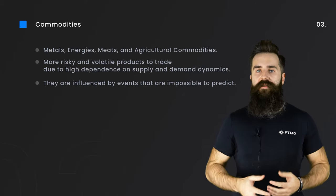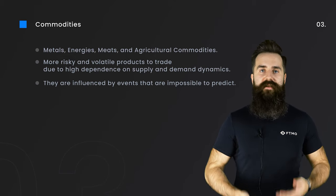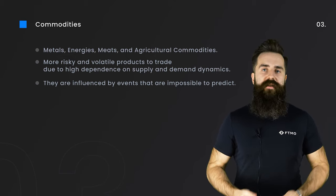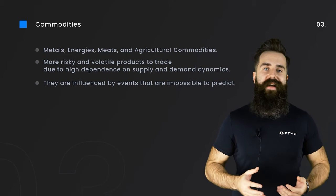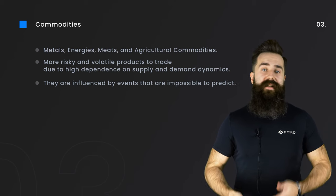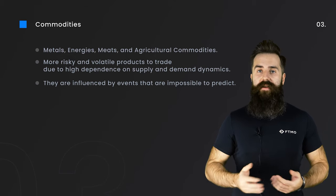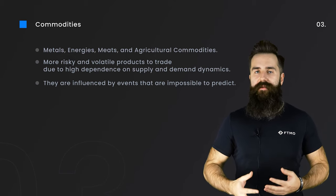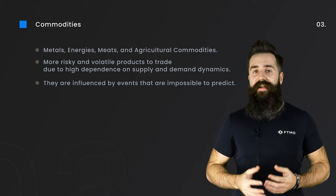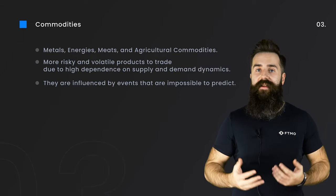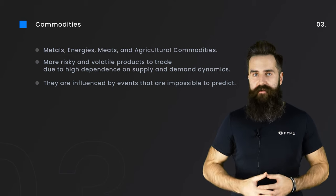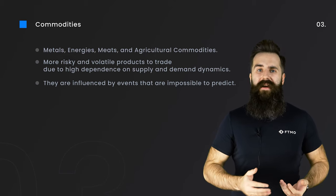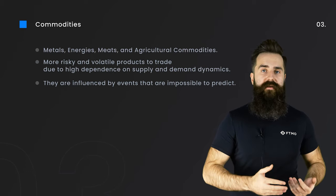Commodities are separated into four major categories: metals, energies, meats, and agricultural commodities. In metals we can find gold, silver, copper, or palladium. Energies are crude oil, Brent oil, or natural gas. These two categories are the most popular ones traders choose to trade, but we can find some traders that also specialize in meats such as live cattle or lean hogs, or agricultural commodities where we can find corn or wheat. Commodities in general tend to be more of a risky and volatile product to trade, thanks to high dependence on supply and demand dynamics. They are very often influenced by events that are impossible to predict, such as the oil crash of 2020, natural or man-made disasters, or epidemics.